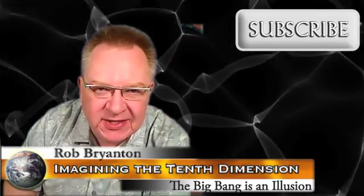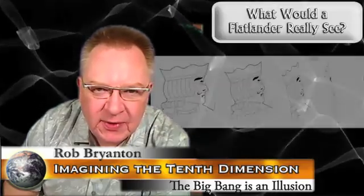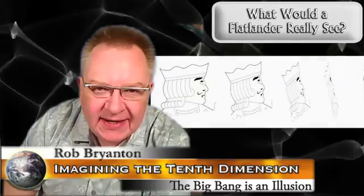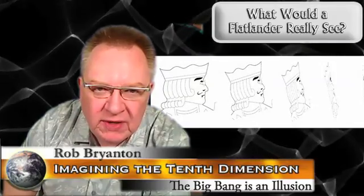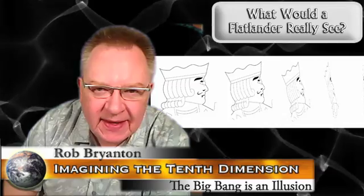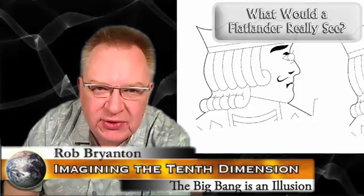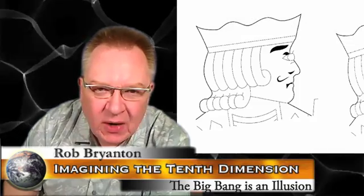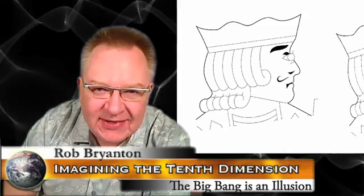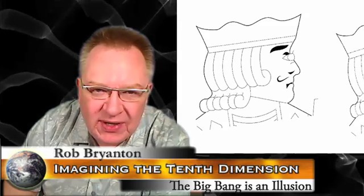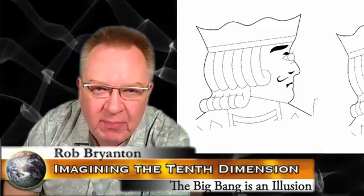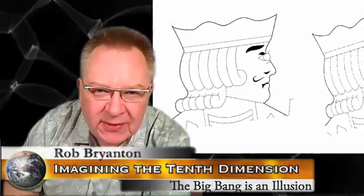There's a series of images you might remember from a blog I published a year ago that we're looking at here. The blog was called What Would a Flatlander Really See? The first image on the left shows what an imaginary 2D flatlander, in this case our one-eyed Jack, looks like to us as we 3D creatures look down from above. Above is a word that would make no sense to a flatlander, since his world has only length and width.